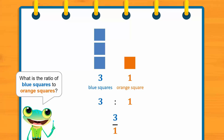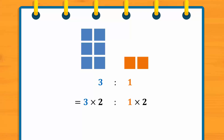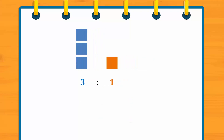In a ratio, if we multiply or divide one of the numbers, the same process must be applied to the other numbers. For example, 3 to 1 is the same as 3 times 2 to 1 times 2. This is equivalent to doubling the number of blue and orange boxes. Since there are now six blue boxes and two orange boxes, our new ratio is 6 to 2.